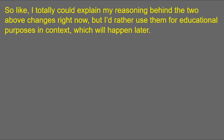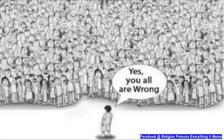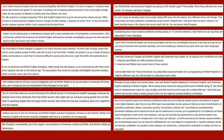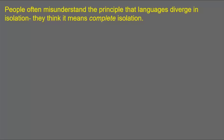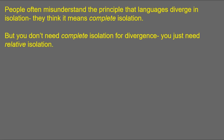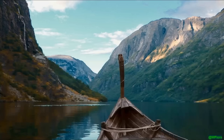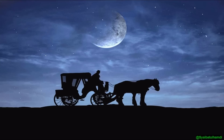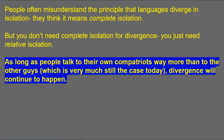I'll explain the reasons behind my changes of stance later so I can put them into a linguistic context. One of the most frequent comments I got on that video was whether American and British English will still diverge even with modern technology. This entire dilemma is caused by a misunderstanding: languages diverge in isolation, but people often interpret that as meaning complete isolation. You don't need complete isolation — you just need relative isolation. Even before modern technology, people communicated with those around them, yet languages still diverged. As long as you talk to your own people way more than you talk to the other group, you'll each come up with your own innovations in phonology, grammar, and vocabulary.